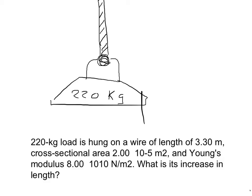Question 4 says, a 220 kg load is hung on a wire of length 3.3 meters, cross-sectional area of 2 times 10 to the negative 5th meters squared, and a Young's modulus of 8 times 10 to the 10th newtons per meter squared. What is the increase in the length?